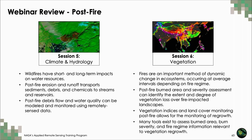In session five, instructors discussed the short and long-term impacts of wildfires on water resources, noted methods for monitoring post-fire erosion and runoff transport of sediments, debris, and chemicals to streams and reservoirs, and showed how post-fire debris flow and water quality can be modeled and monitored using remote sensing. In today's session, part six, we covered burned area products and burn severity assessment, showcased the usefulness of vegetation indices and land cover assessment for monitoring post-fire vegetation regrowth, and highlighted a variety of tools useful for post-fire mapping.